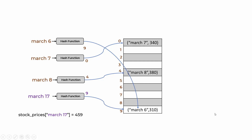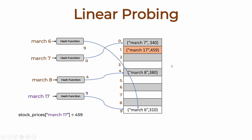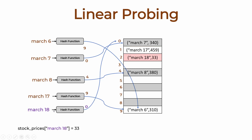The second approach for solving collisions is called linear probing. When for March 17 we get index 9 and find there is already a value stored at that location, we go to the next available location. If there was a 10th location that was empty I would store March 17 there, but since there isn't one, I go in reverse — the 0th location is also filled, so I go to location number 1 and store March 17 there. It is called linear probing because I am linearly probing, meaning searching for an empty slot to store my key-value pair. For another example, March 18 resolved to index 0, which was occupied, so we went to index 1, which was also filled, so the value is stored at index 2.